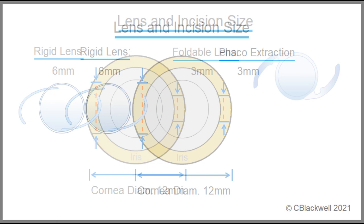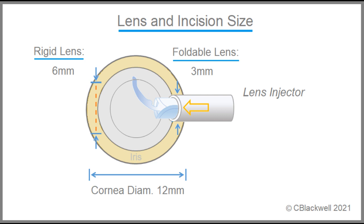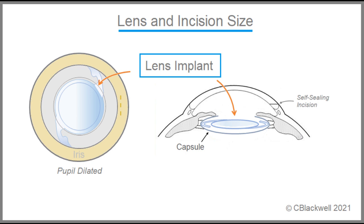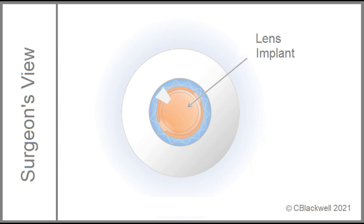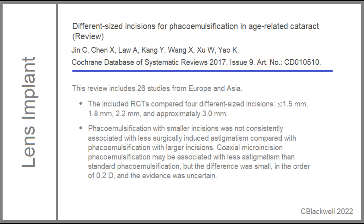The answer to lens size was to make the lens out of a flexible material that could be folded. That began with hydrogel, then silicone, and now a soft acrylic material. In practice, the folded lens is loaded into a syringe and slowly injected into the eye, where it unfolds and is positioned in the capsule. This is two views of the lens implant in position in the capsule at the end of surgery — the result we are looking for. In the extreme, lenses can be folded up and injected through an opening less than 2mm, though a Cochrane review does not confirm a significant advantage to going smaller than 3mm.